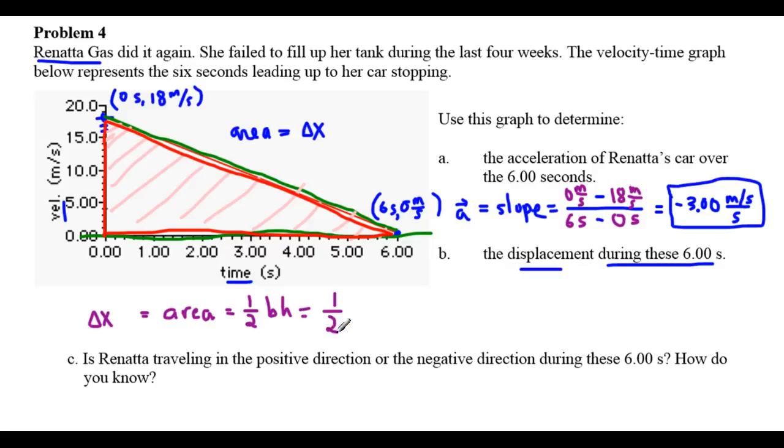So one-half base times height. The base of this triangle, well, the triangle starts over at zero seconds, and it extends all the way to six seconds. So the base is from zero to six, the base is six seconds long. The height of the triangle goes from zero all the way up to 18, so the height is 18 meters per second tall. When we multiply this all out, half of 18 times six, well, half of 18 is nine. Nine times six is 54. The units are seconds times meter per second. So we've got seconds over seconds. The seconds cancel. And that leaves us with a unit of meters. The displacement came out positive, by the way.